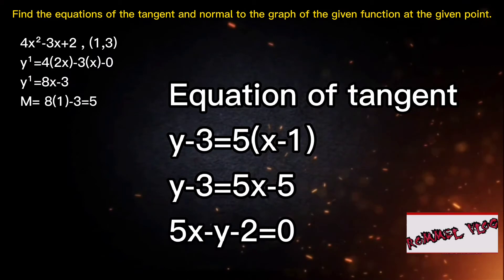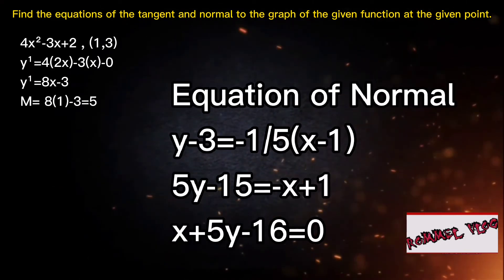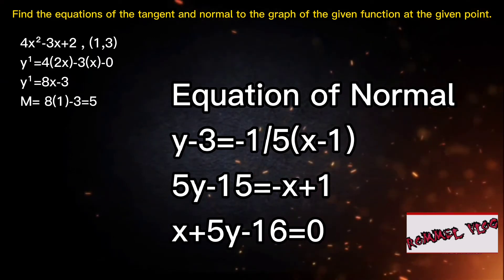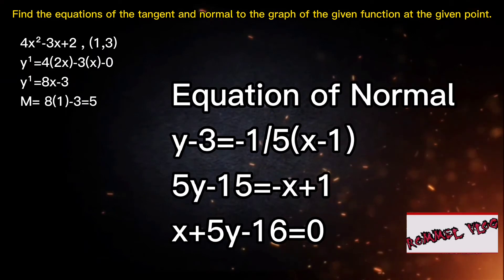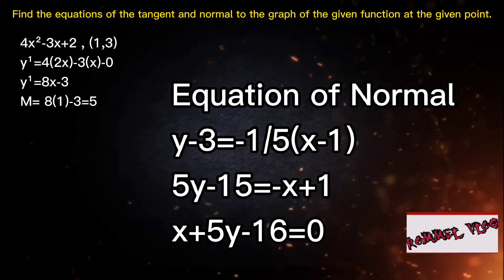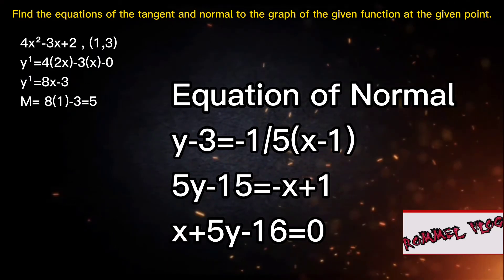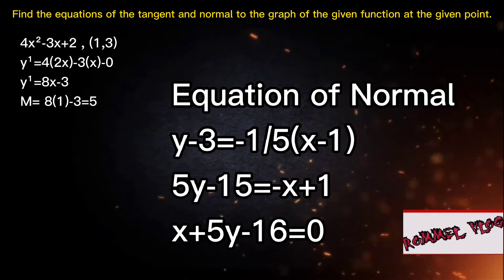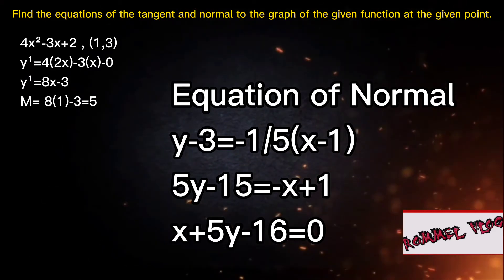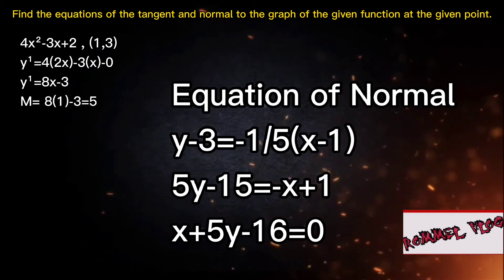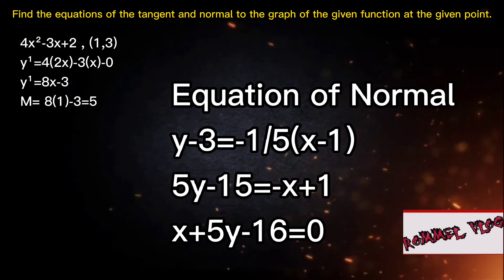Now for the equation of normal. We have y minus 3 equals negative 1 over 5 times the quantity of x minus 1. Multiplying through by 5: 5y minus 15 equals negative x plus 1. The final equation of the normal is x plus 5y minus 16 equals 0, at the given function 4x squared minus 3x plus 2 at the point (1, 3).